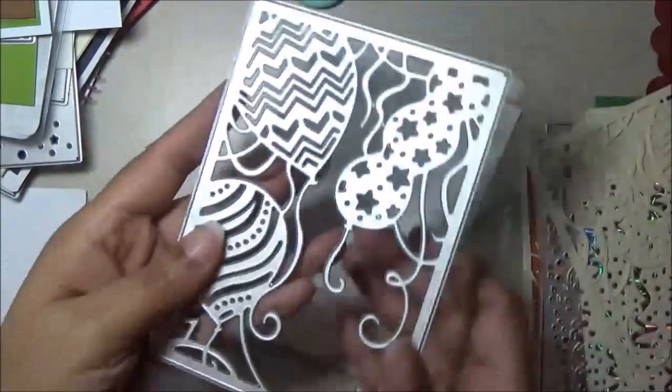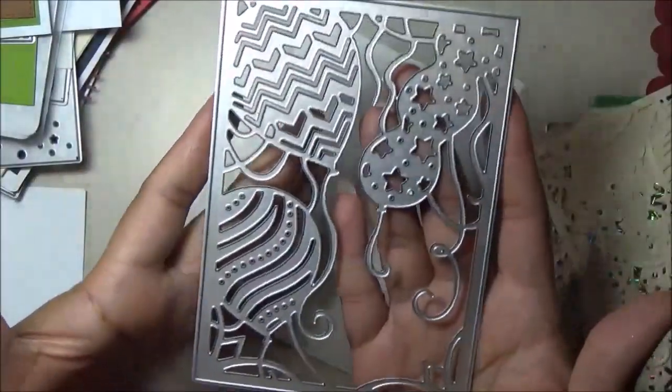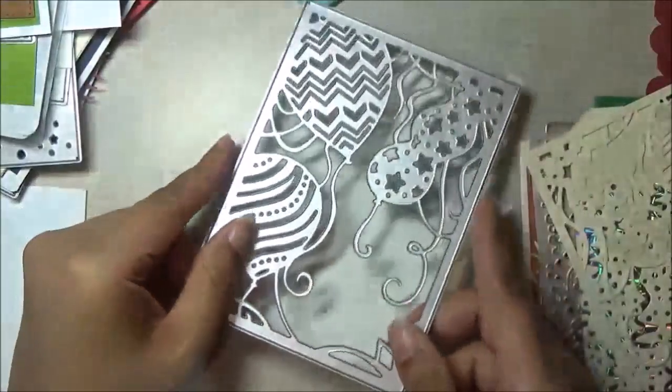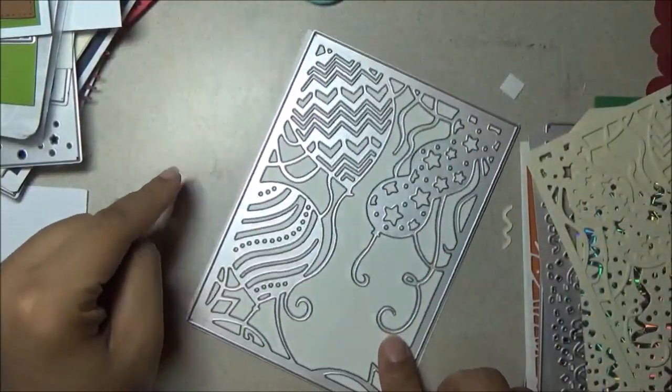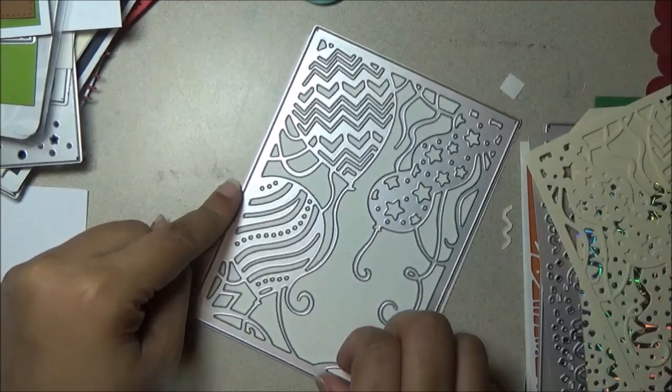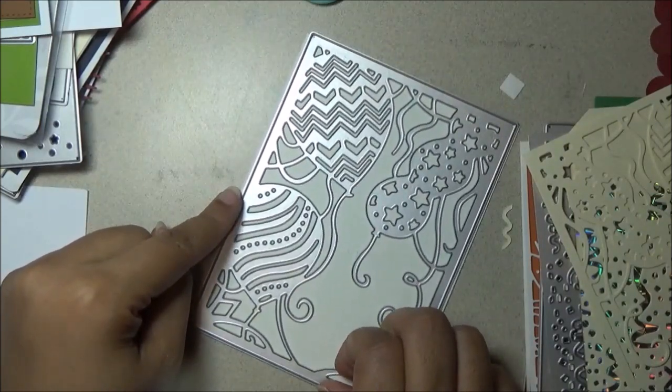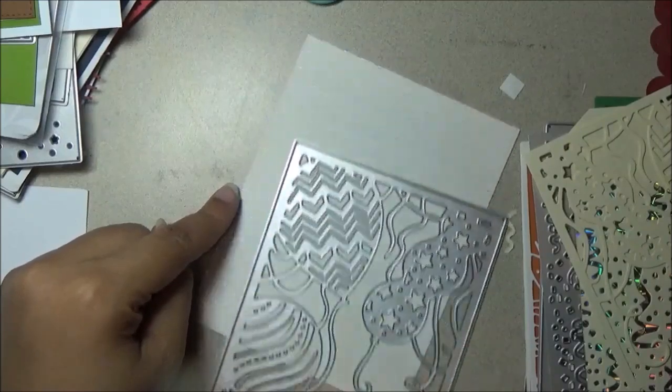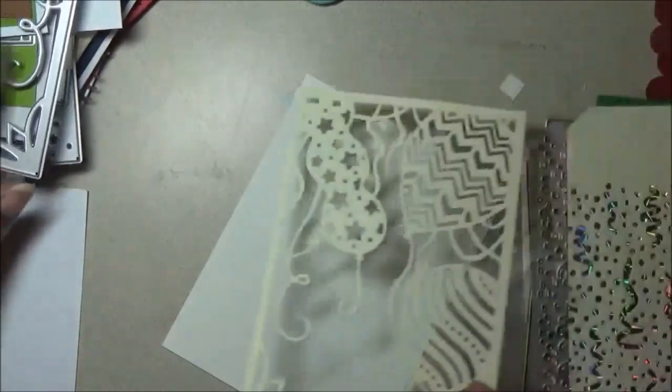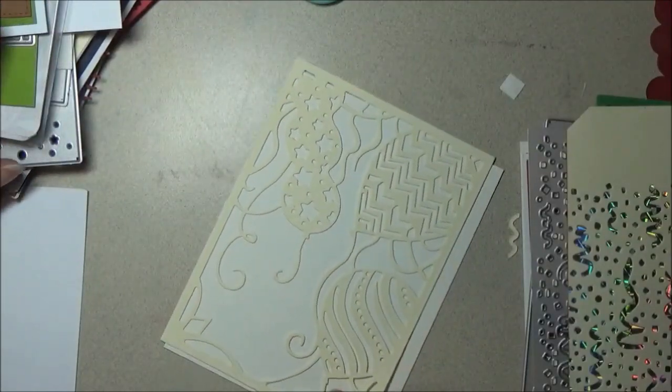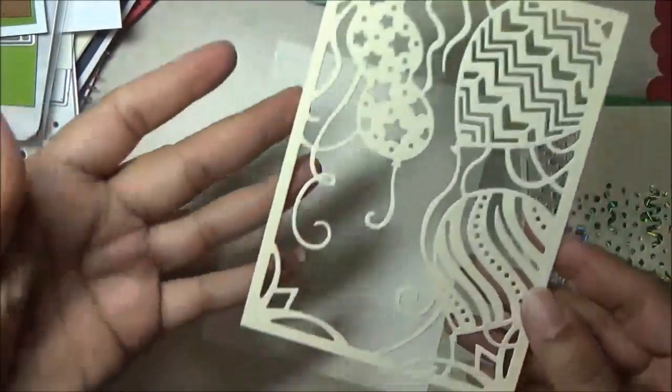Then I have this fun birthday-themed, balloon-themed background, really pretty there. And it's a little bit bigger than an A2 size, so you may want to trim down the edges just a hair. So I'll show you that. So this is the A2 size. And then when I flip it over, you can see it goes over just a little bit when I line it up. So it's just a little bit bigger than an A2 size.